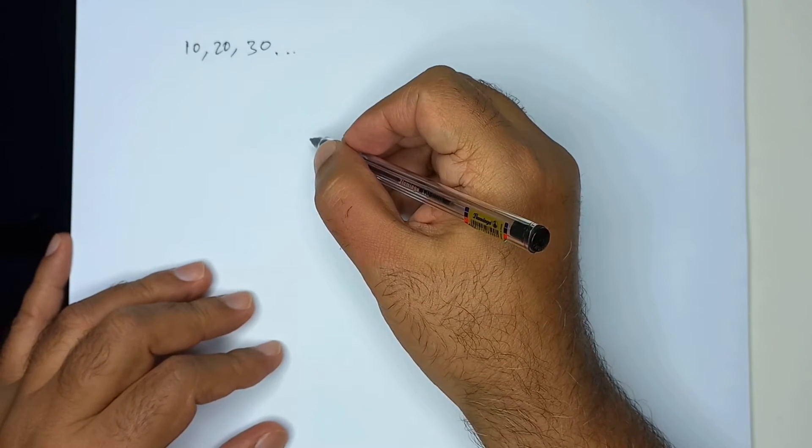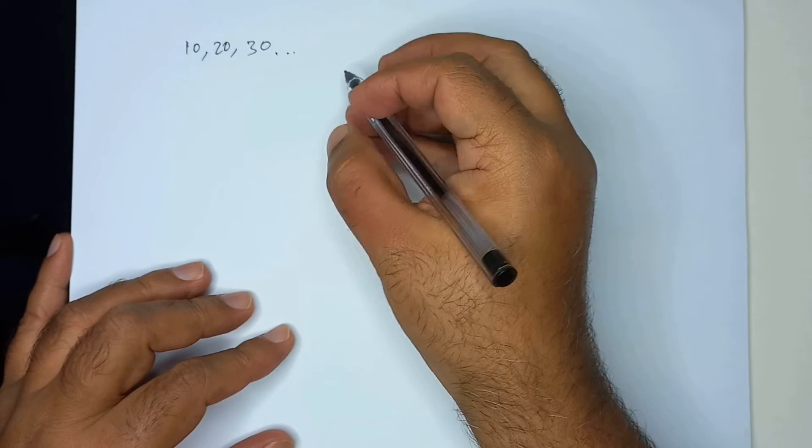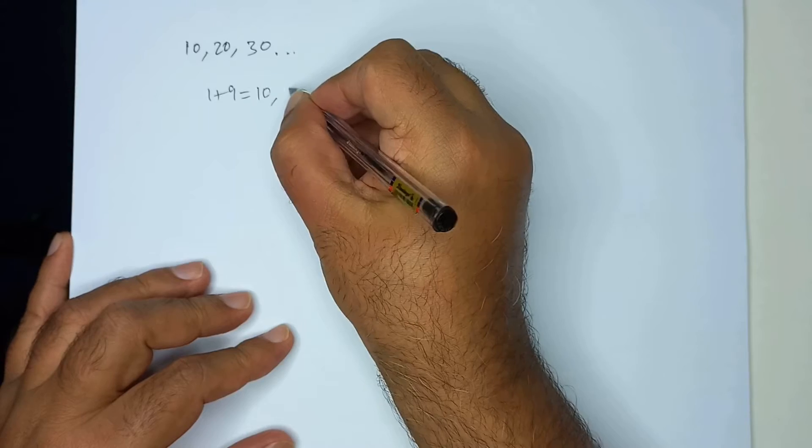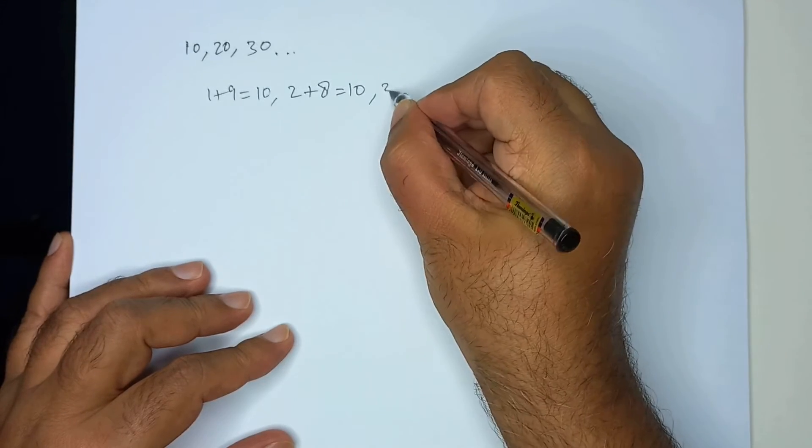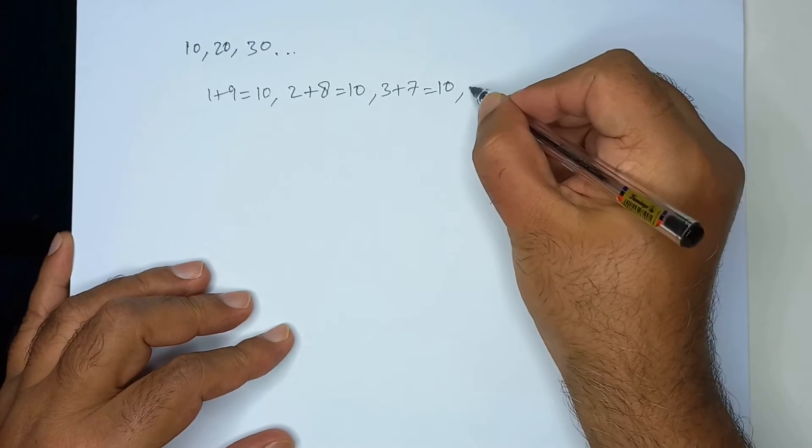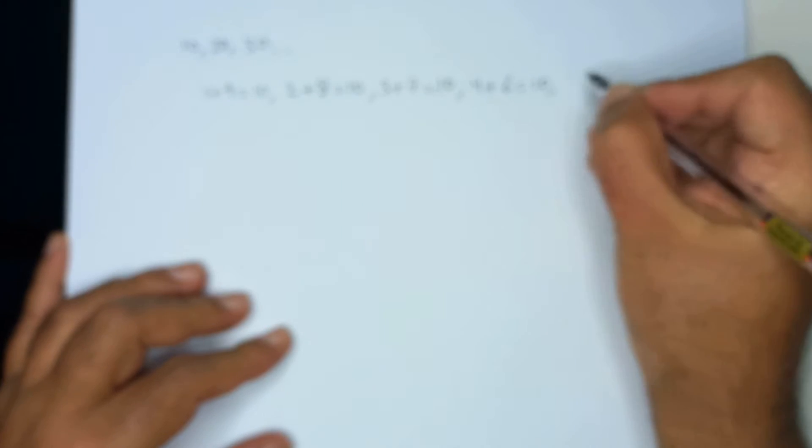It is important to know the 5 pairs of numbers that add up to 10, like 1 plus 9 is equal to 10, then 2 plus 8 is equal to 10 and 3 plus 7 is equal to 10, then 4 plus 6 is equal to 10 and 5 plus 5 is equal to 10.